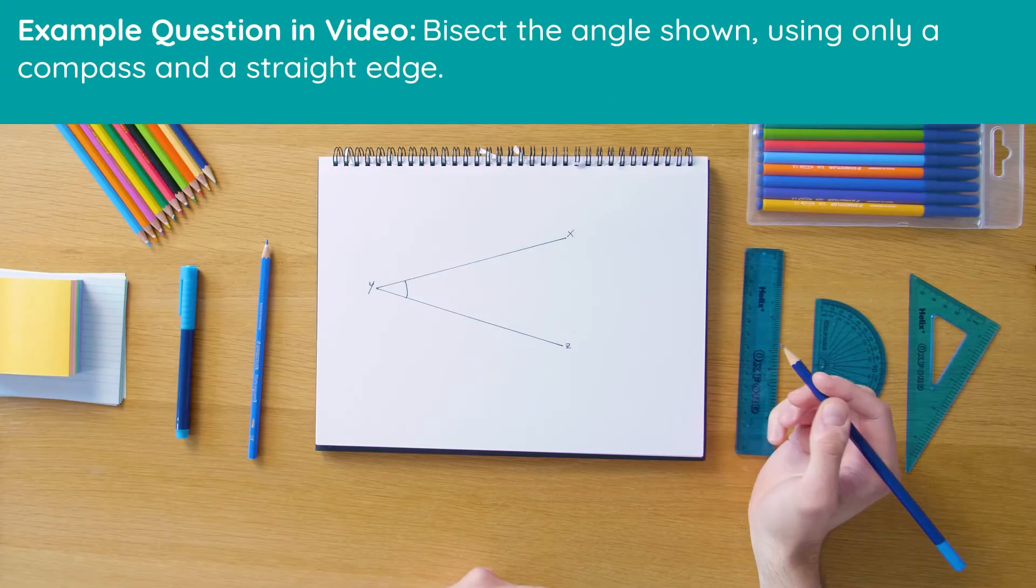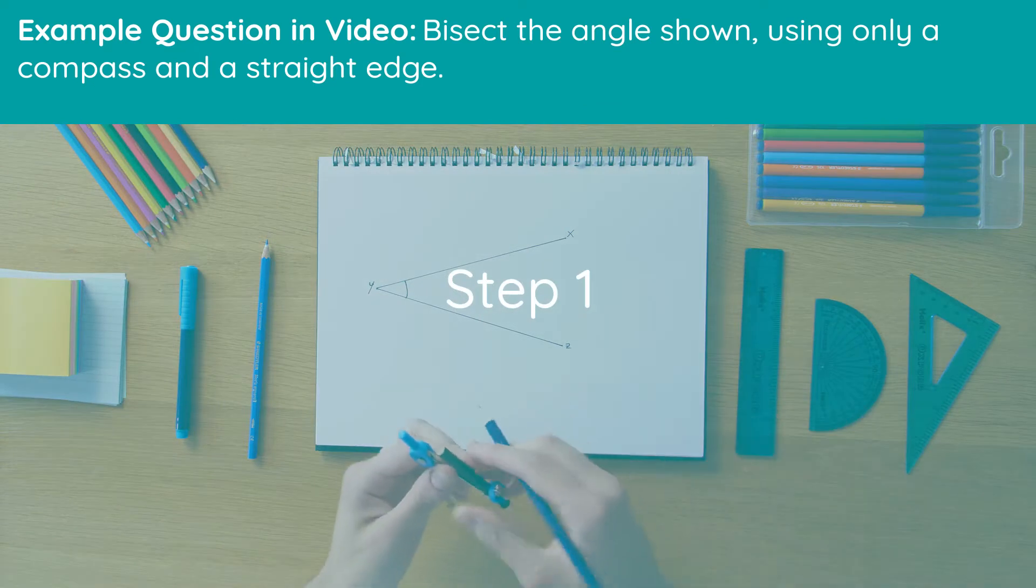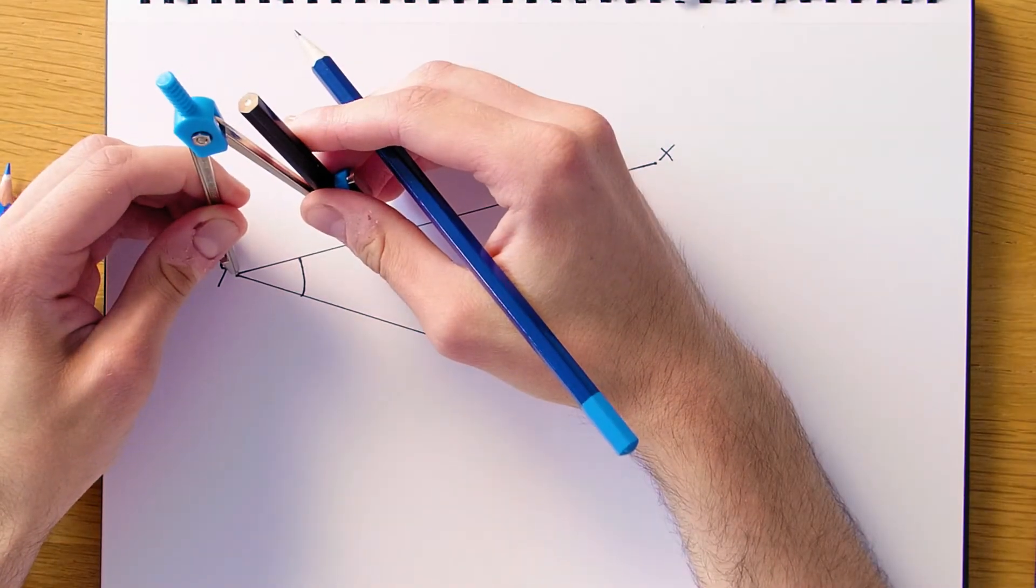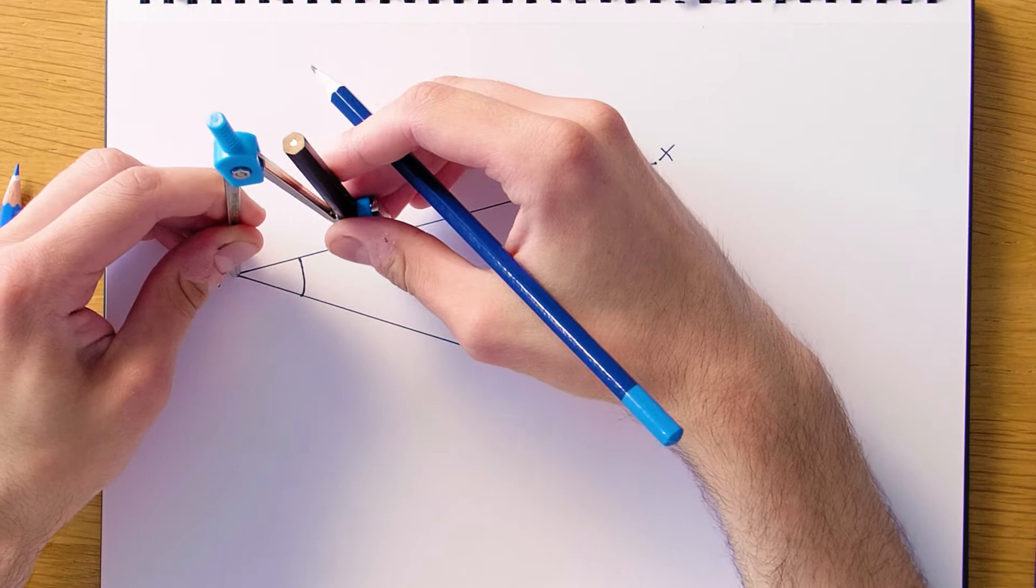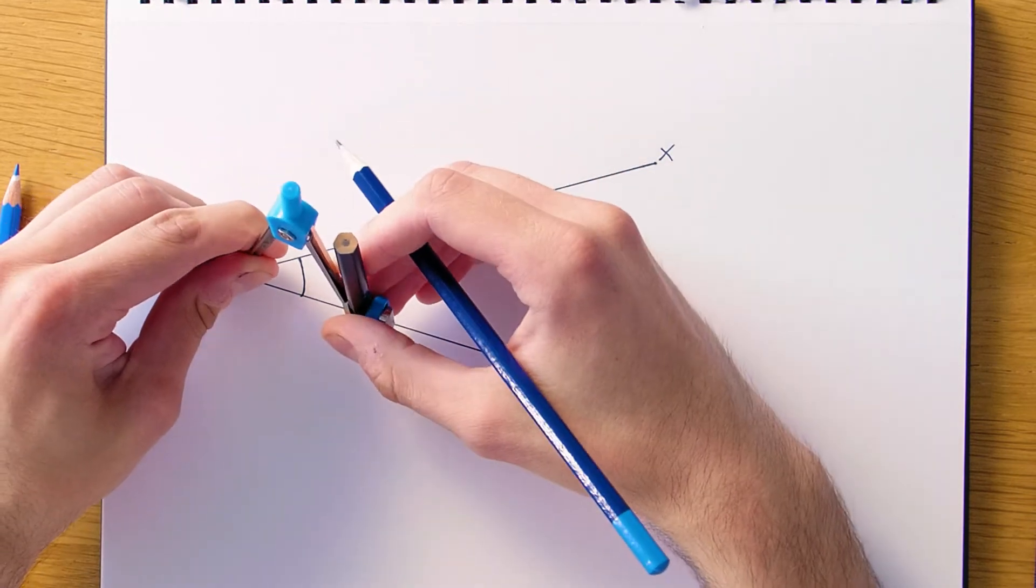Okay so here's our original angle before it was bisected and the first step of this construction is just going to be to swing a nice arc from the point Y which is going to intersect both the line YX here and also YZ.